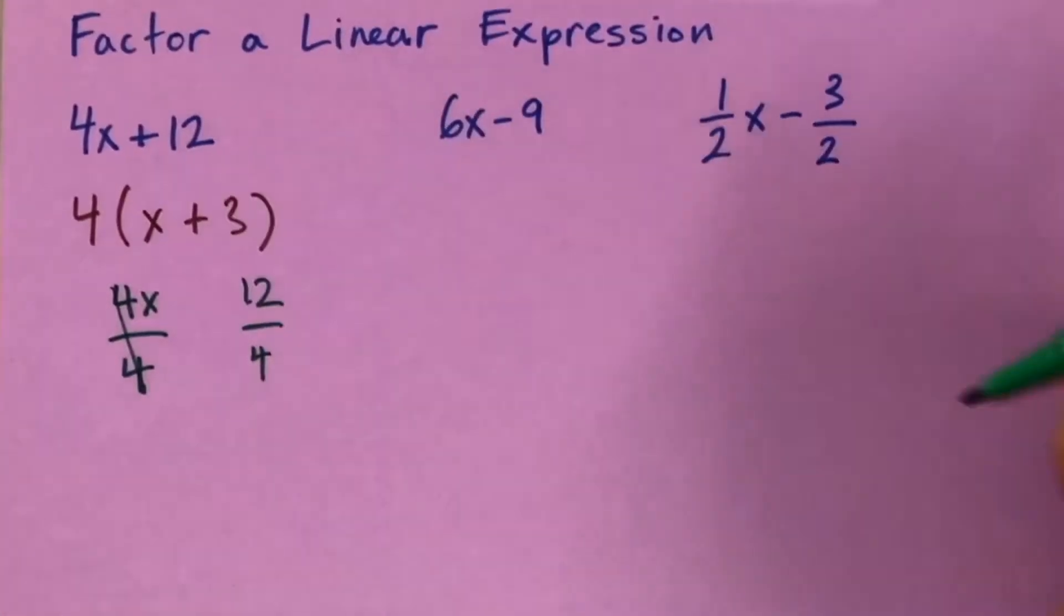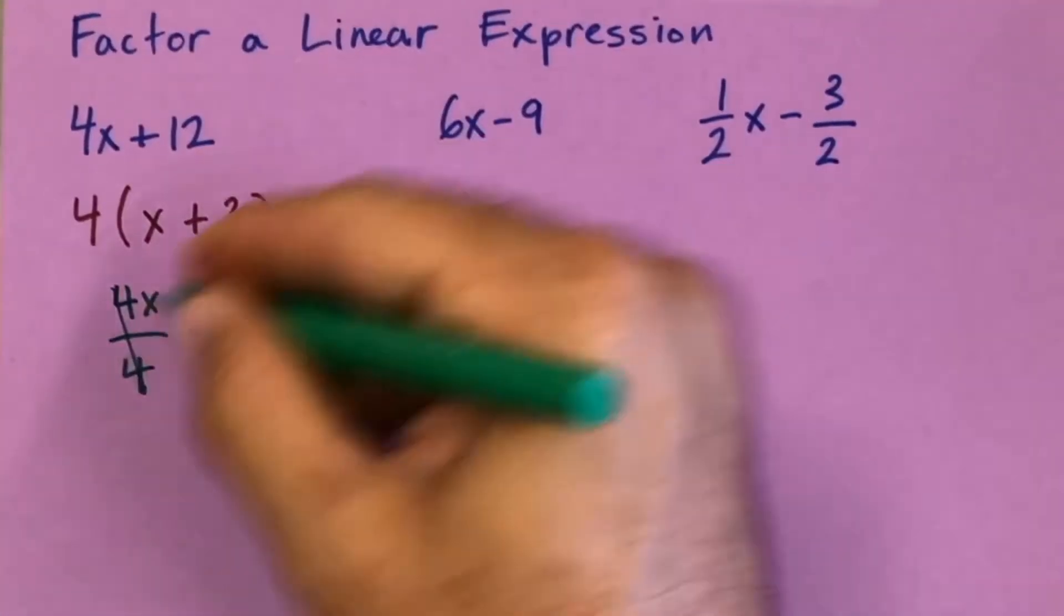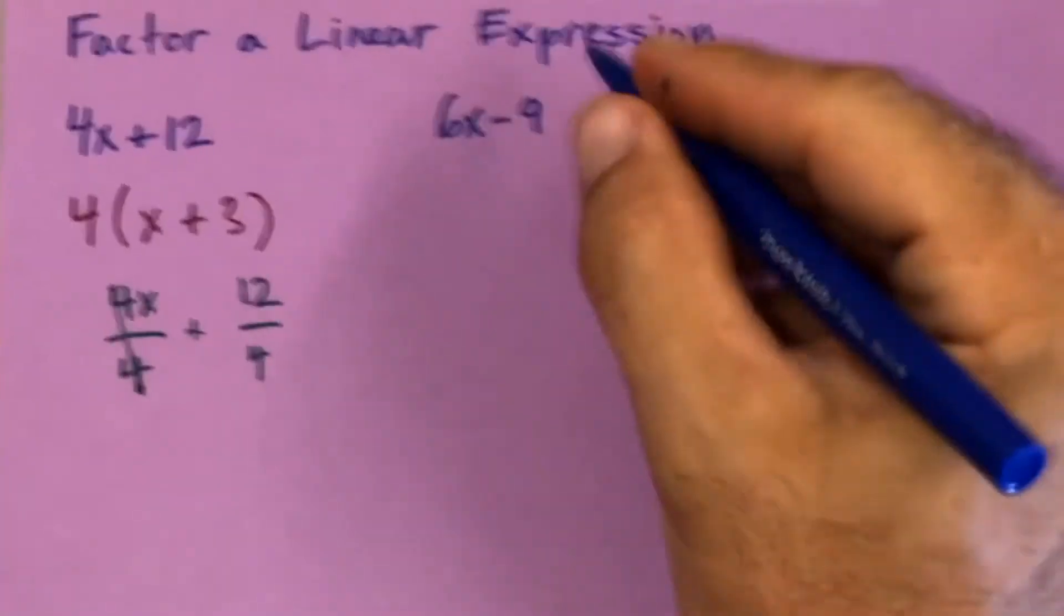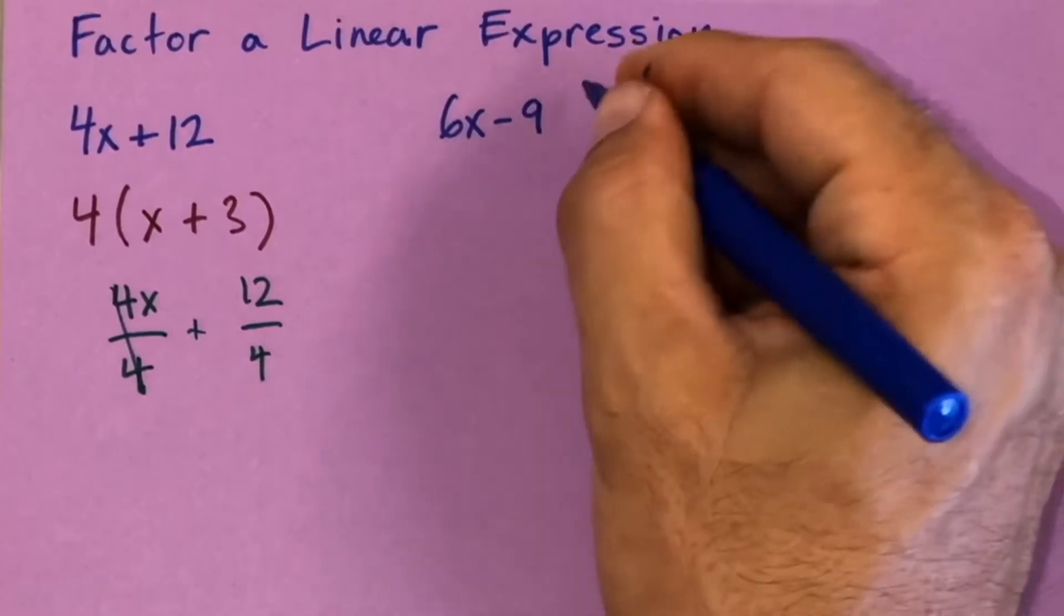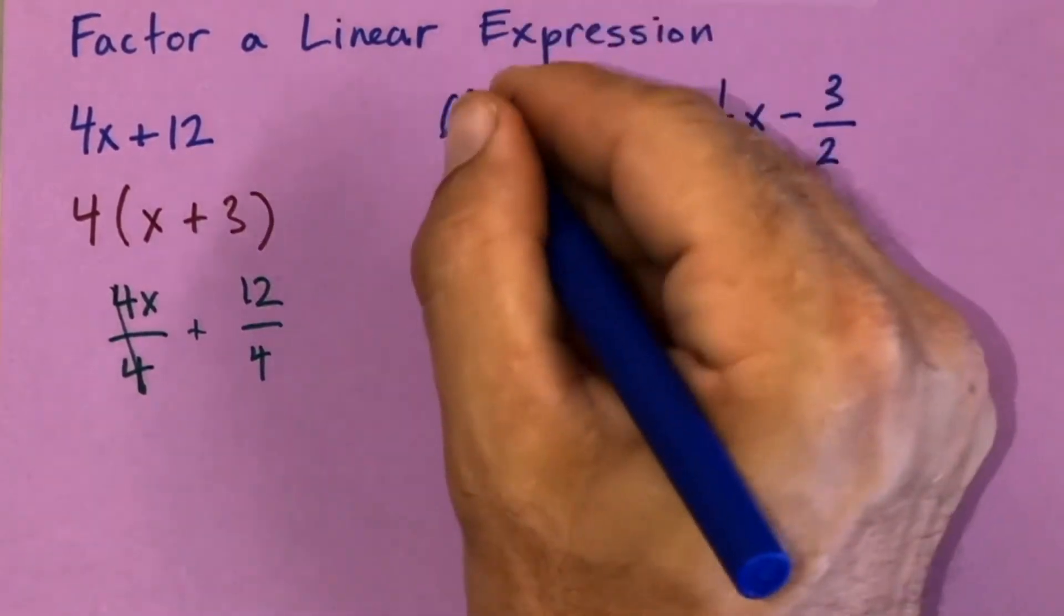...we would also get this 3 here, and that's essentially what you're doing as far as factoring. Now you may not always end up with an x in the parentheses. For instance, the greatest common factor of 6 and 9 is 3.